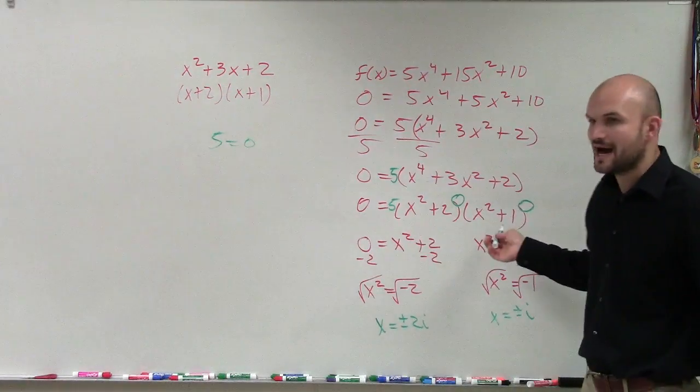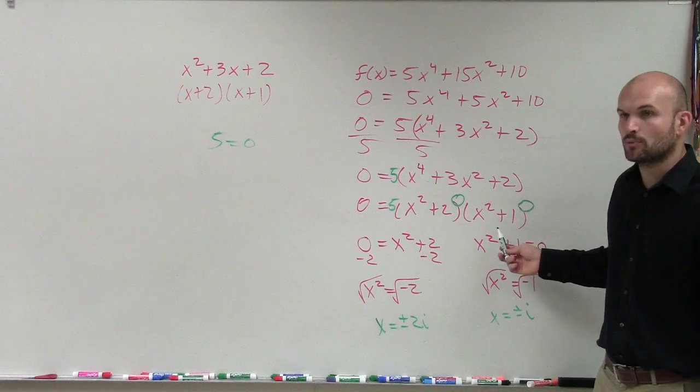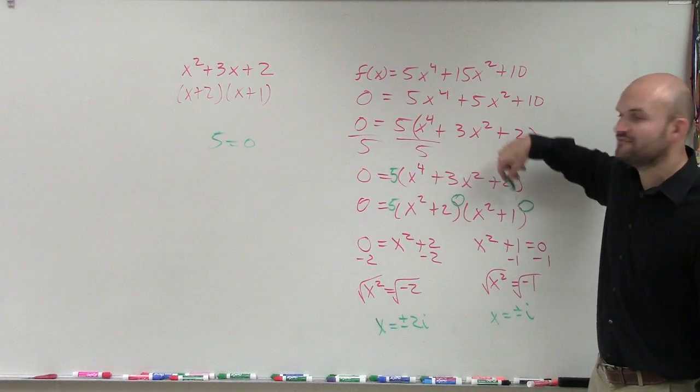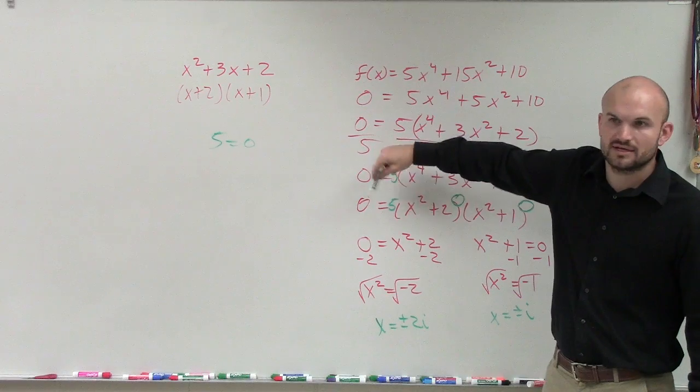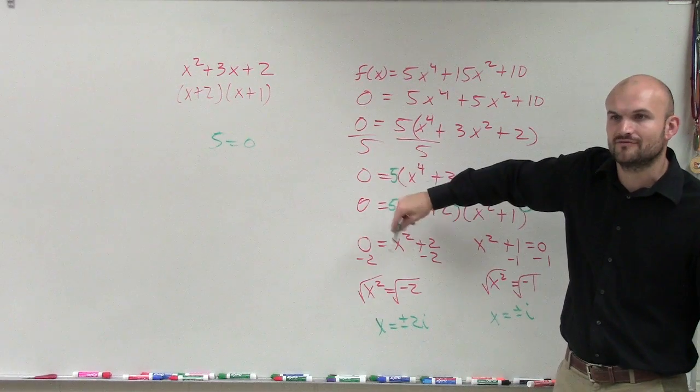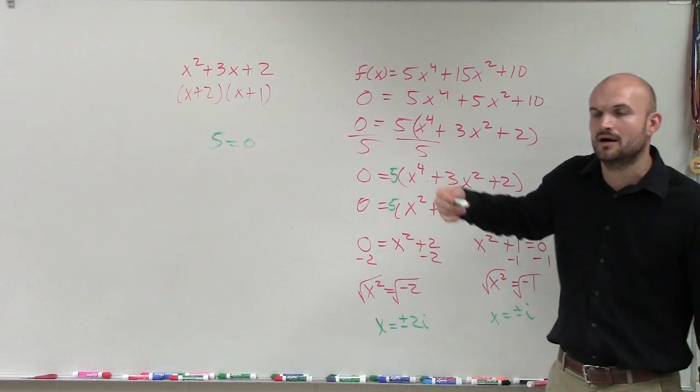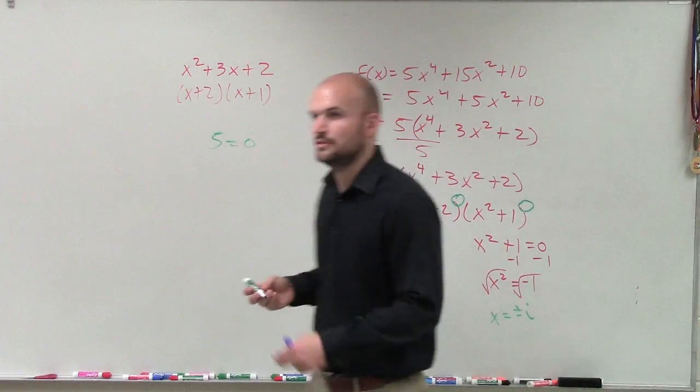So if you keep the 5 and now you go to do zero product property, you only do the factors. This 5 is not going to be a part of one of these factors because it's just a multiple.